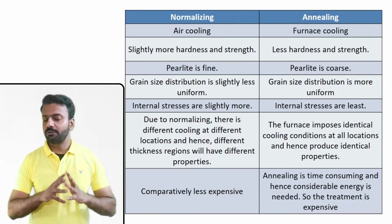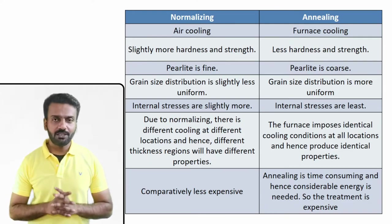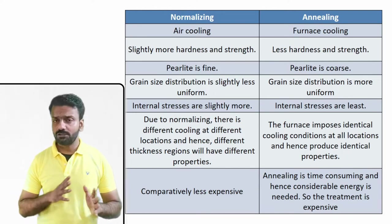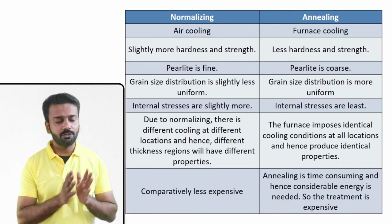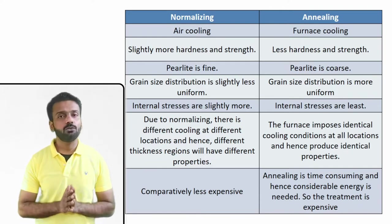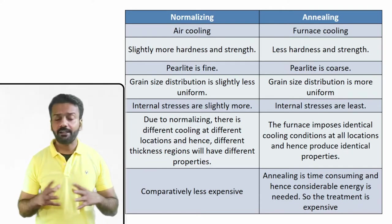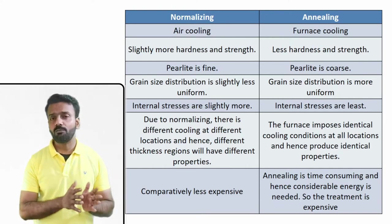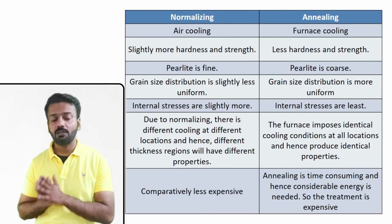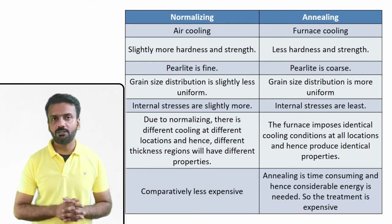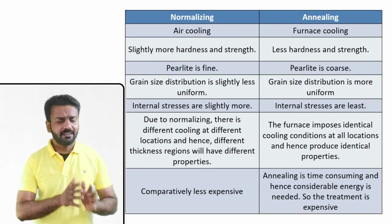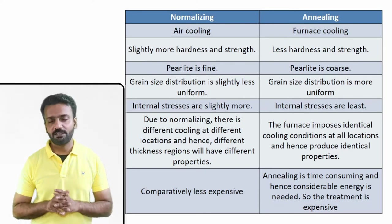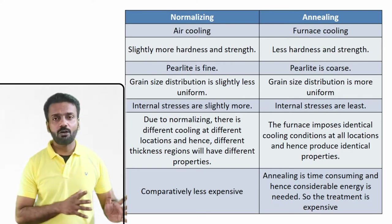This is a very important slide to review before any examination, as most materials and metallurgy exams have questions on annealing and normalizing. Starting with the comparison: in normalizing we cool in air, while in annealing we use furnace cooling. The strength achieved in normalizing is slightly more than in annealed steel. Pearlite is fine in normalizing and coarser in annealing.